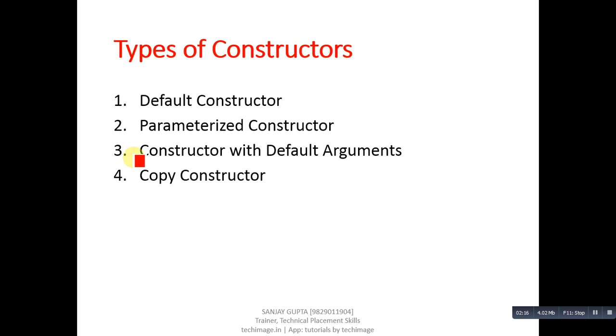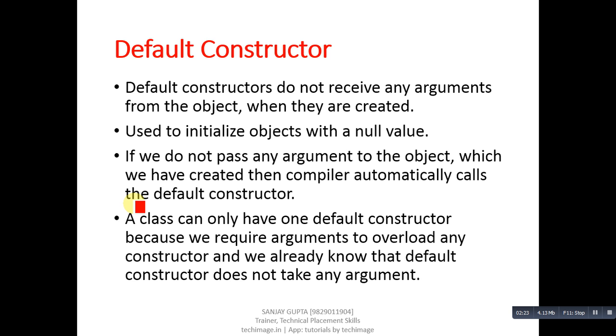Now you can see the types of constructors. There are total four types: default constructor, parameterized constructor, constructor with default arguments, and copy constructor. In this video I am going to discuss only about the default constructor.